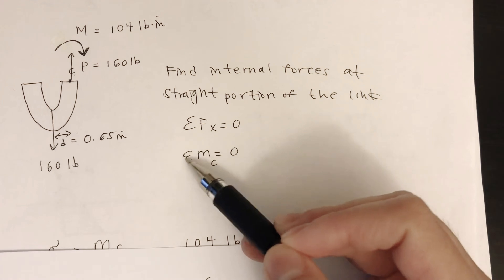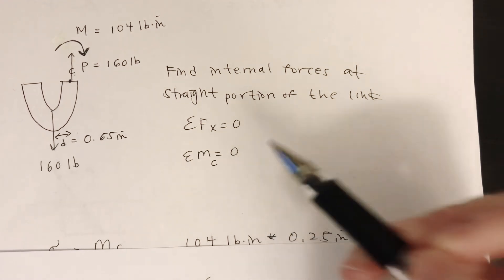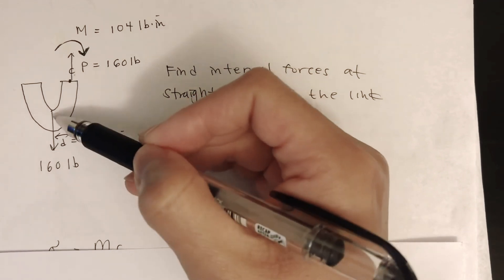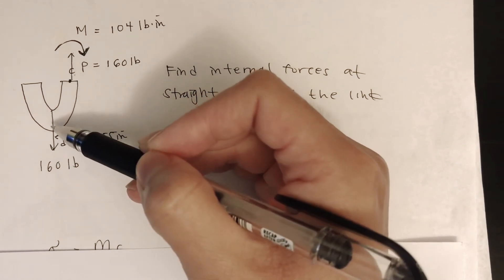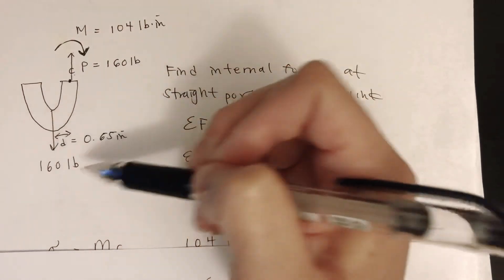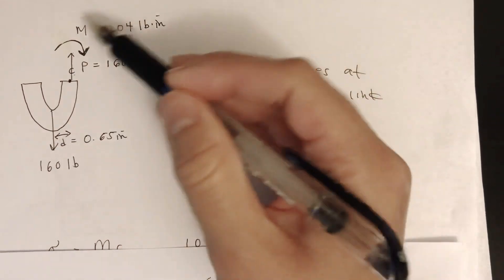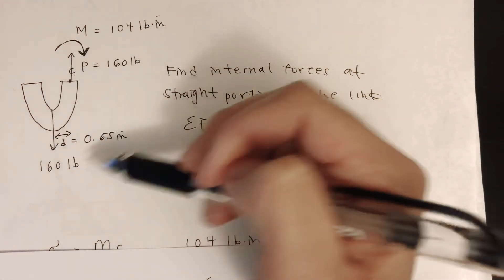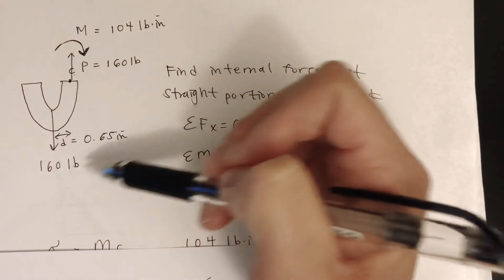Now let's take the sum of the moments at point C equals to zero. This 160 pound force is going to make a counterclockwise moment, so it's going to be 160 times 0.65.